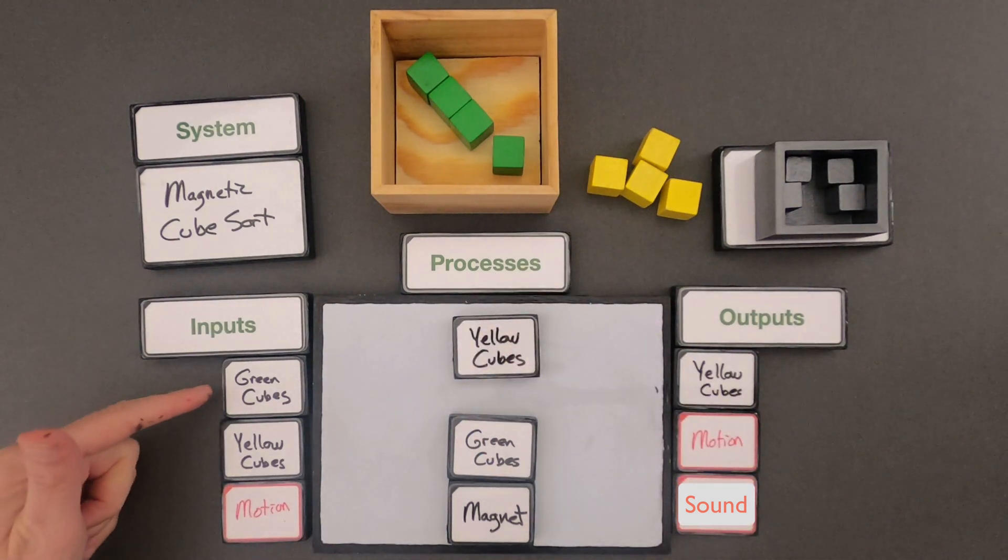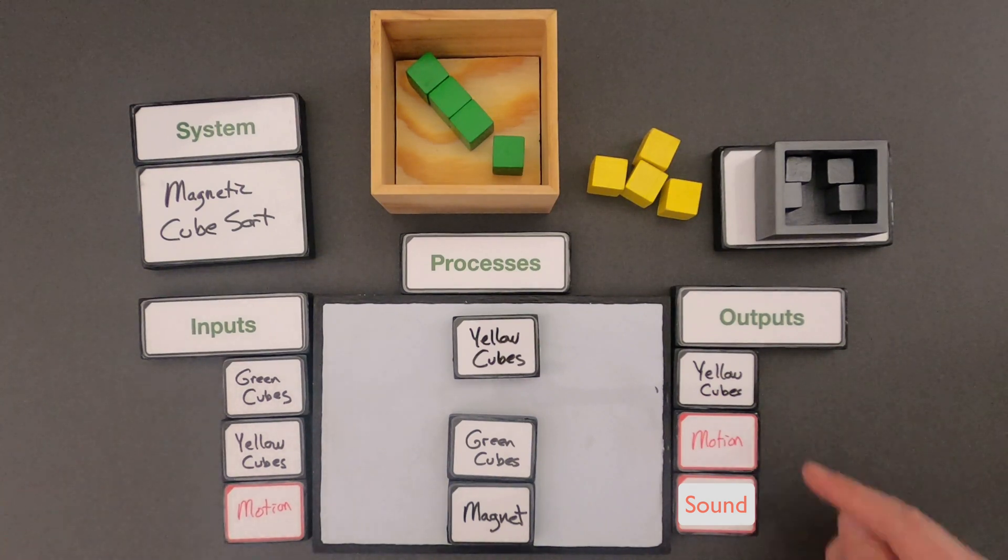Okay, what I have going into the system are the green cubes, the yellow cubes, and only the yellow cubes are coming out. The green cubes, you can see, are staying inside the system itself. So the first thing I should do is show you where I think the motion is going.